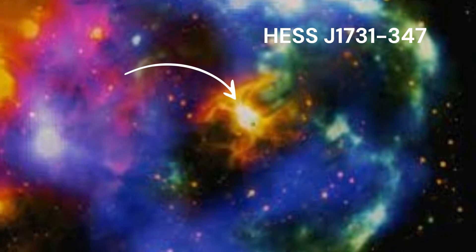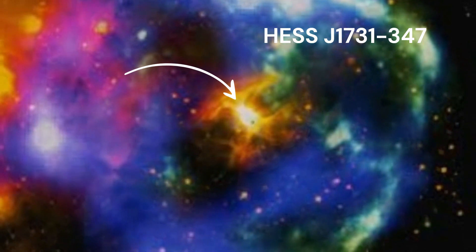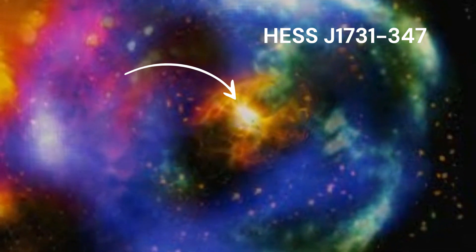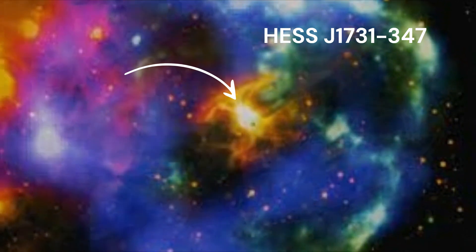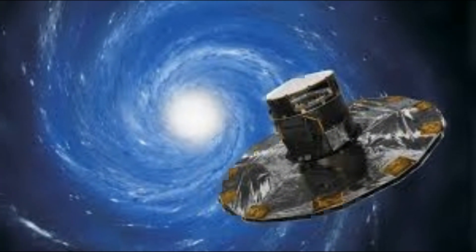Researchers established the neutron star's radius, mass, and thermal emission spectra by analyzing observational data of the remnant obtained by the astrometric Gaia Space Observatory and the Newton X-ray Space Telescope.